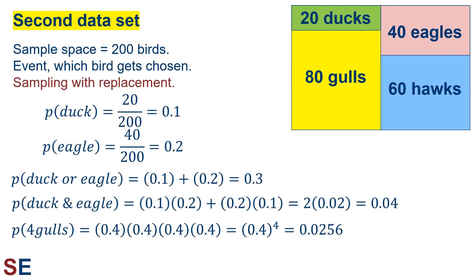Let's look at some similar probability calculations using a second data set — a sample space of 200 birds: 20 ducks, 80 gulls, 40 eagles, and 60 hawks. If we sample with replacement, the probability of a duck would be 20 out of 200 equals 0.1, and the probability of an eagle would be 40 out of 200 equals 0.2. The probability of choosing an individual and it is a duck or an eagle would be 0.1 plus 0.2 equals 0.3. The probability of choosing two birds and obtaining a duck and an eagle would be the probability of duck then eagle (0.1 times 0.2) plus the probability of eagle then duck (0.2 times 0.1), giving us 2 times 0.02 equals 0.04.